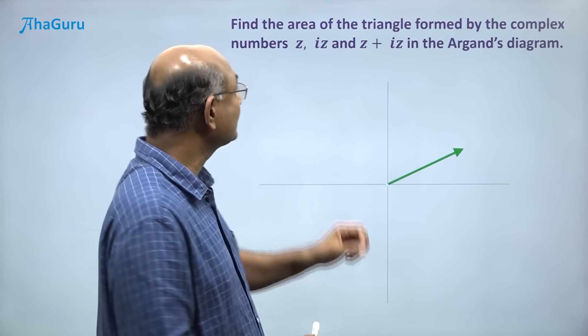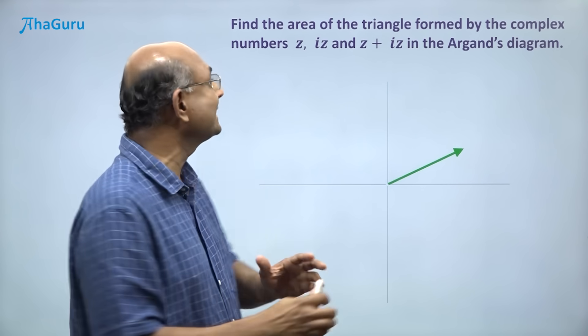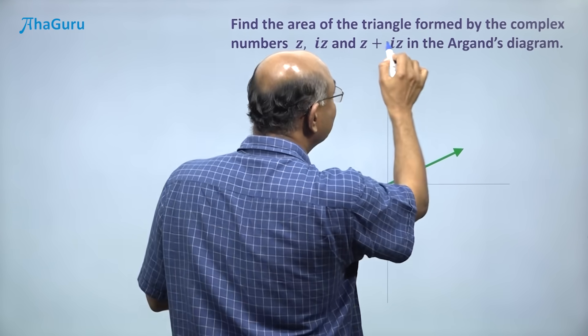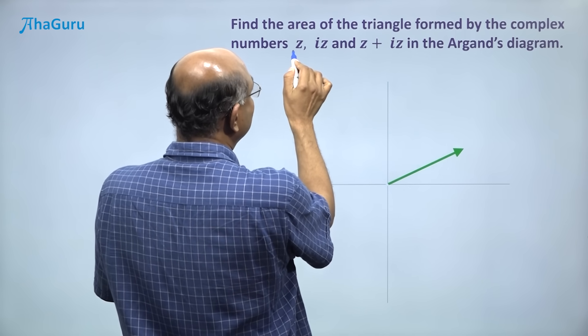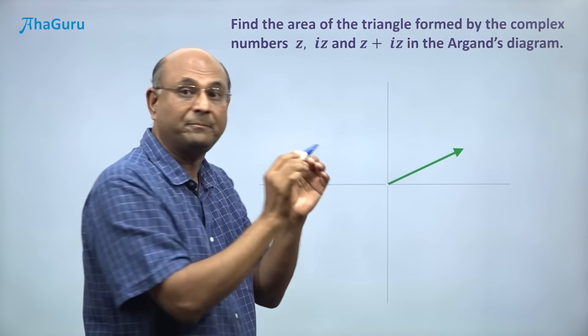So let us now use the three facts to solve this question in 10 seconds. We want to find the area of the triangle and the complex numbers are z, iz, and z plus iz.